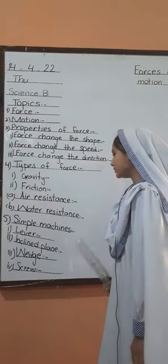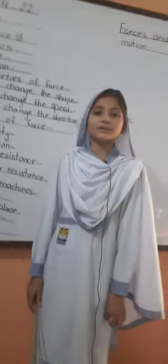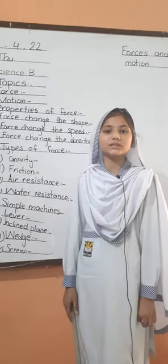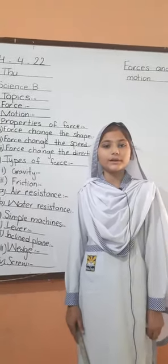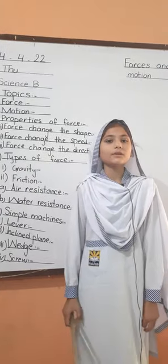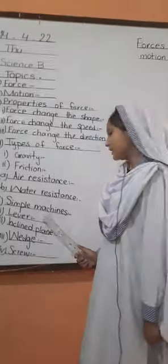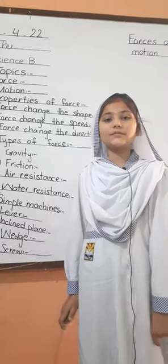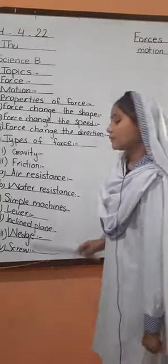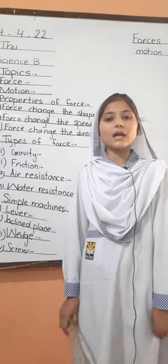Number 3: Simple machines. Simple machines are tools which help us apply force and do work more easily. These machines include the lever, inclined plane, wheel, and wedge. A lever is a simple machine that helps lift a load with little effort. For example, a wheelbarrow is a type of lever.